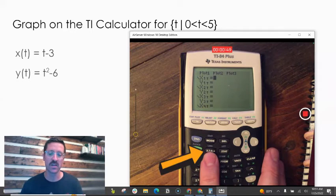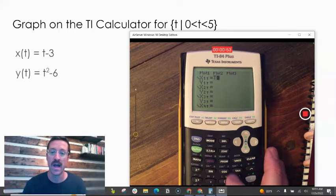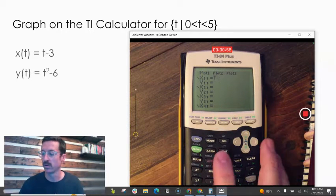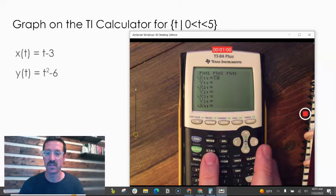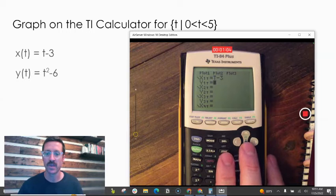This same variable button used for x when we're graphing standard rectangular equations also has a t next to it. I don't have to do anything different. Whatever mode we're in, it's going to make that our variable. In polar mode, it would do theta. So I have t minus 3 for that equation.